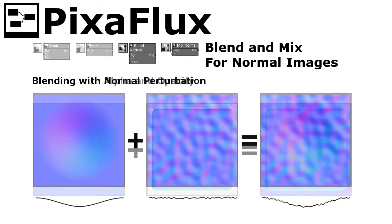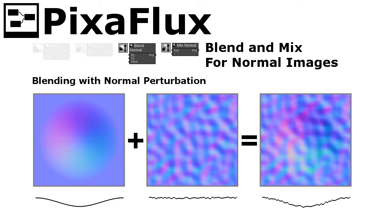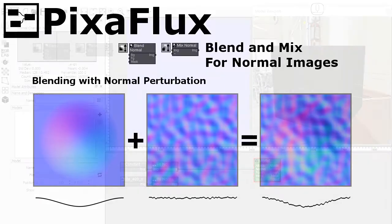When blending with normal perturbation, the normals of the foreground image perturb the normals of the background image. To blend with normal perturbation, you use the blend normal and mix normal nodes in the 3D nodes toolbar submenu.